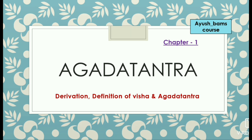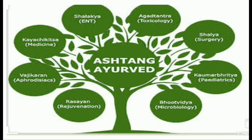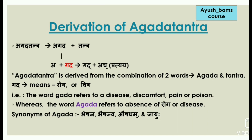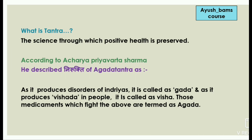Let's enter into the topic. In this subject we will see chapter one: Agadha Tantra — that is, definition and derivation of Visha and Agadha Tantra. Agadha Tantra is one of the eight branches of Ayurveda, that is Astanga Ayurveda. Agadha Tantra is derived from a combination of two words: Agadha and Tantra. Agadha means roga or visha — the word 'gada' refers to disease, discomfort, pain, or poison, whereas 'agadha' refers to the absence of roga or disease. Synonyms of Agadha are Bheshaja, Bhaishajya, Aushadham, and Jayuhu.